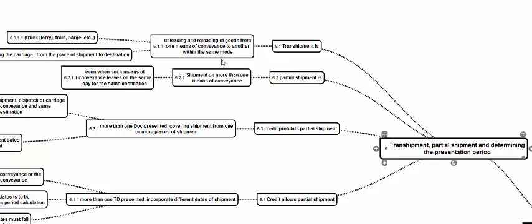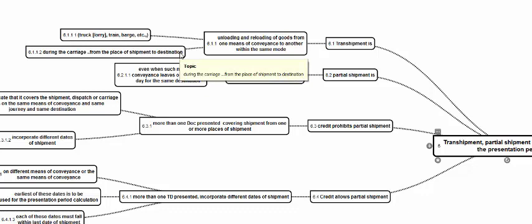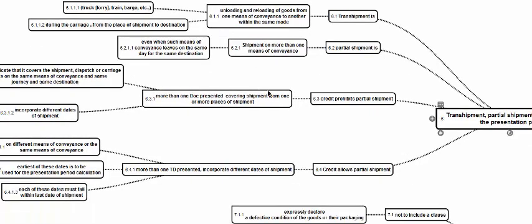Transshipment is the unloading and reloading of goods from one means of conveyance to another within the same mode — such as truck, lorry, train, barge, trailer, roll-on/roll-off. It should happen during carriage from the port of shipment to the port of destination. If goods are loaded onto a trailer, and that trailer is loaded onto a ship or barge and then unloaded with the trailer continuing to move, this is not considered transshipment — it is only transshipment if the unloading and reloading occurs between the stated places, from one means of conveyance to another within the same mode.